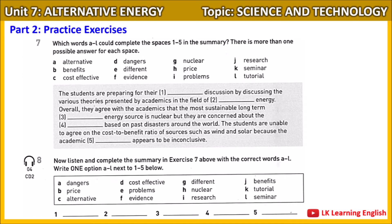Some texts warn of the dangers of nuclear power, using previous disasters as examples. I know what you mean, but I suppose the risk is minimal these days. What do you think about wind and solar energy in terms of the price in relation to the advantages? For me, they're just not worth it. Both are expensive, and it's difficult to predict the amount of energy each one will produce.